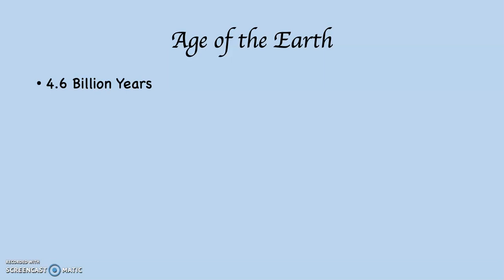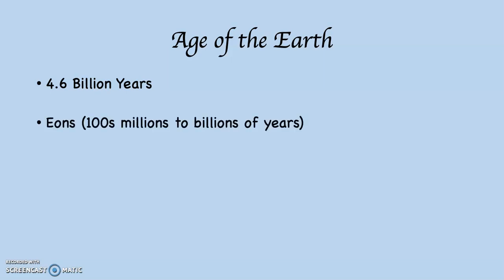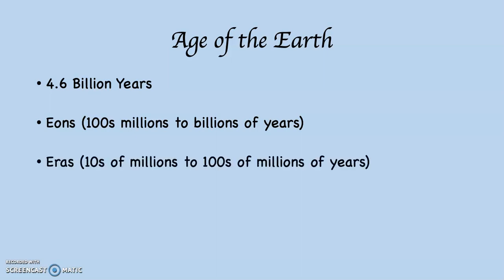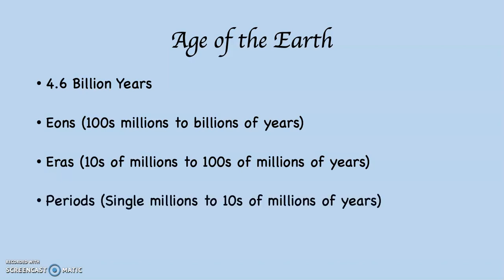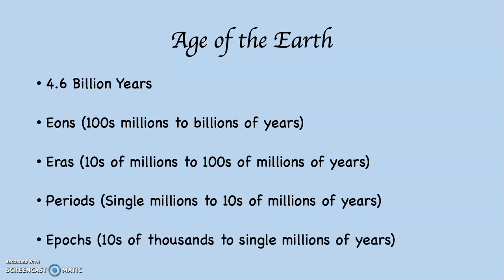Here are these four units. The largest unit we call Eons — these are hundreds of millions of years to billions of years. Eons are then broken down into Eras, which are tens of millions to hundreds of millions of years. Eras are broken down into Periods, which are single-digit millions to tens of millions of years. And Periods are broken down into Epochs,